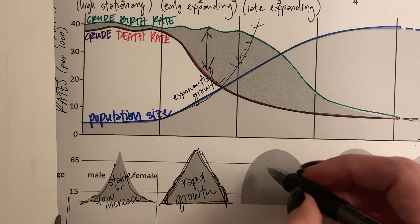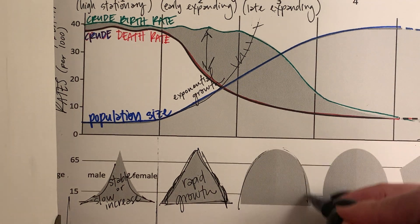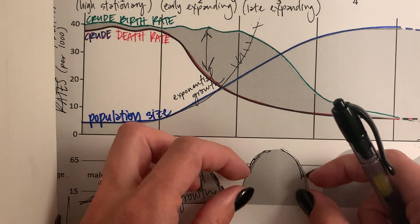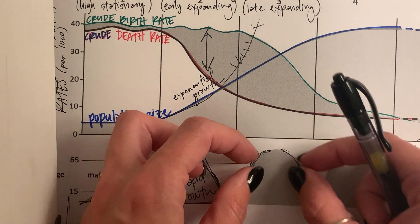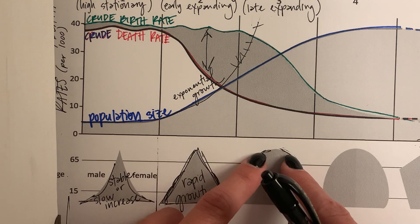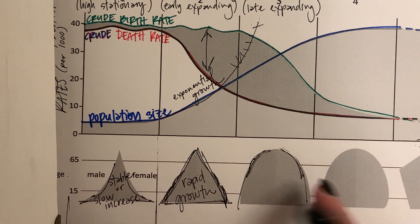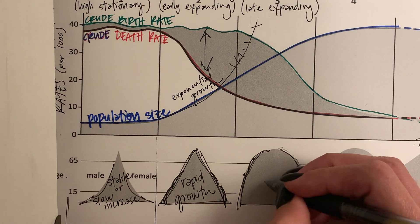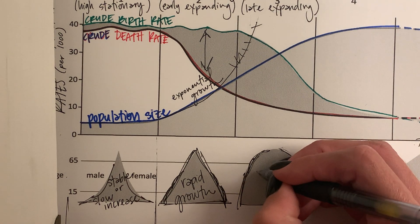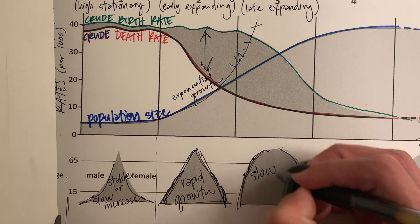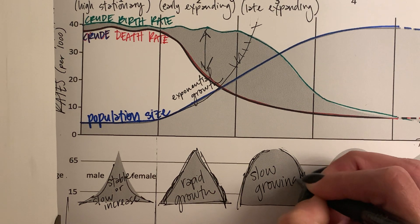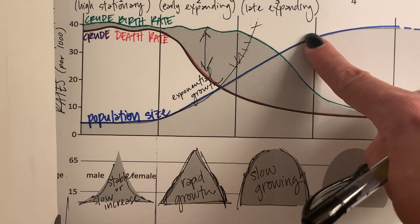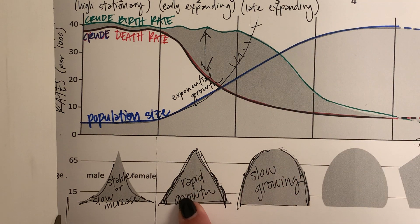The population pyramid in stage three has a good chunk in the reproductive ages and a larger post-reproductive portion than before, corresponding to a growing but slowly growing population. Our population is still increasing, but at a slower rate than before.